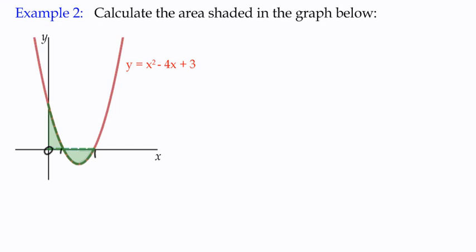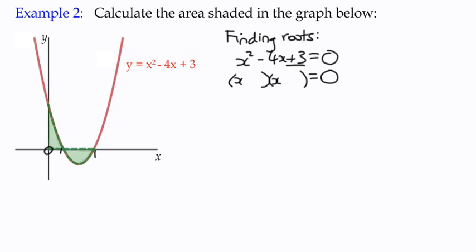The first thing we would want to do is actually to find the values here where it cuts the x-axis. We'll do that by finding the roots. We can say that x squared minus 4x plus 3 equals 0. In other words, the y value is 0.